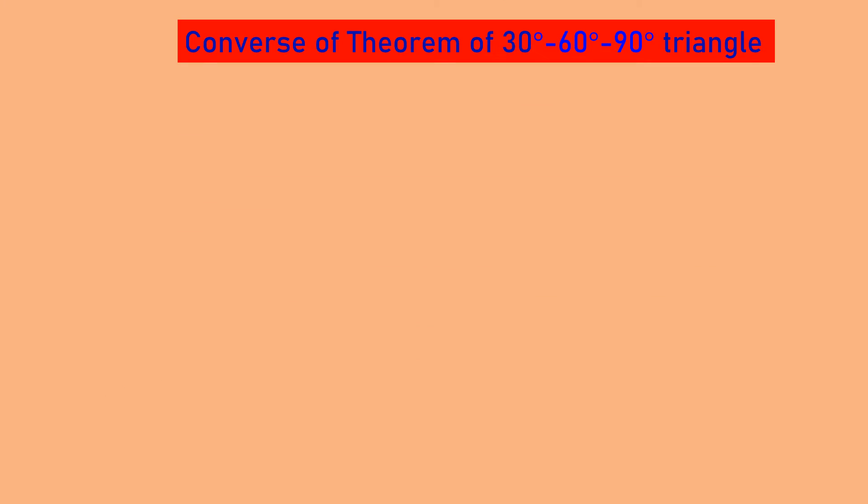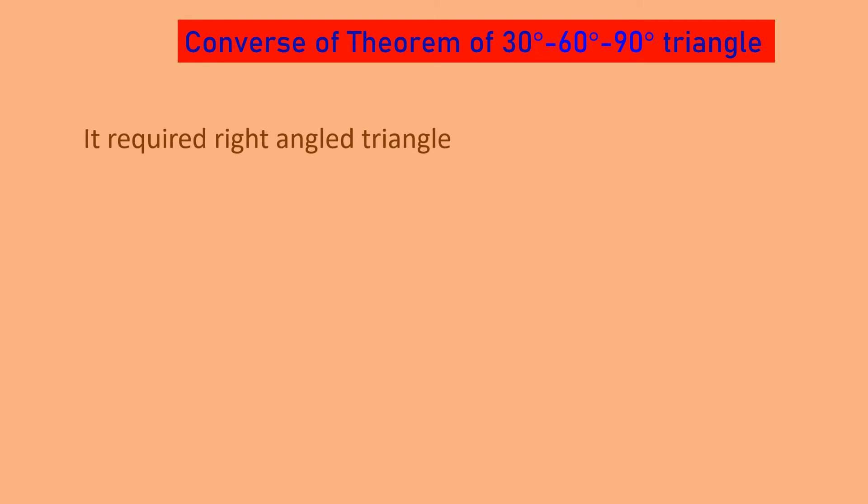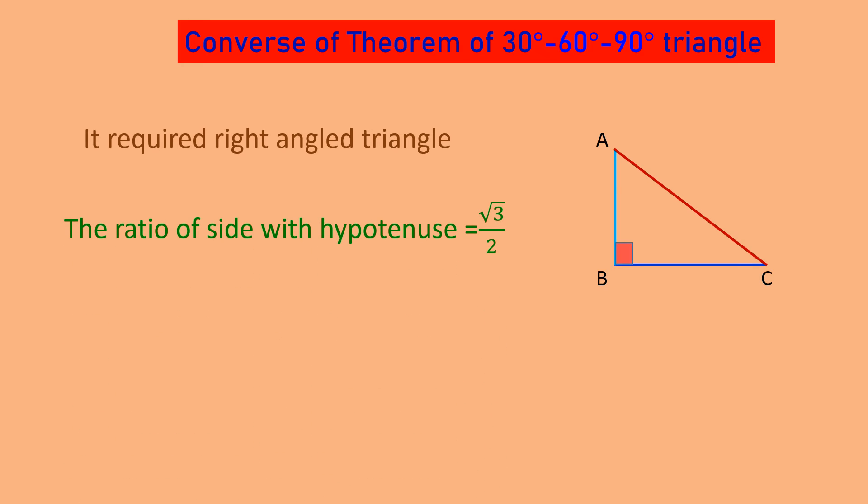Now let us see the converse of the 30-60-90 degree triangle. For the converse, we require a right angle triangle. We have a right angle triangle, and then we look at the ratio of a side to the hypotenuse. We have hypotenuse as AC, and if we take BC upon AC equals root 3 upon 2, what will happen?